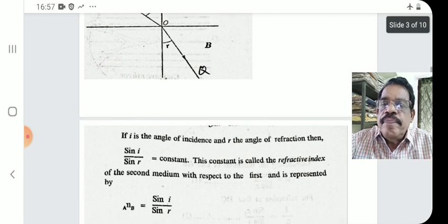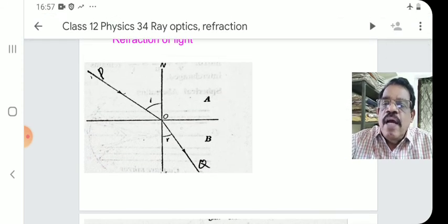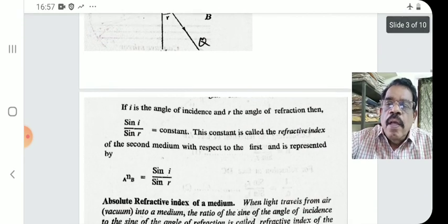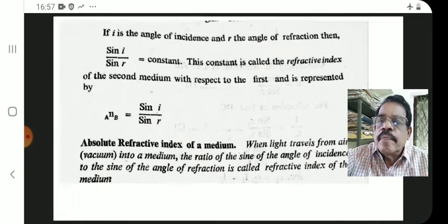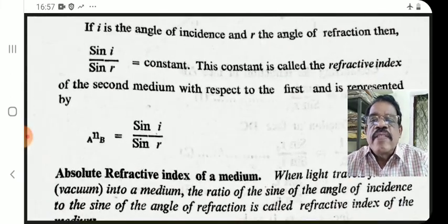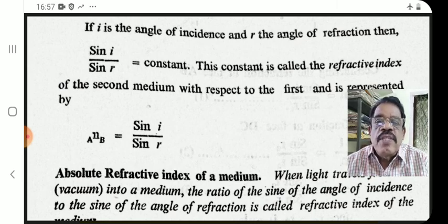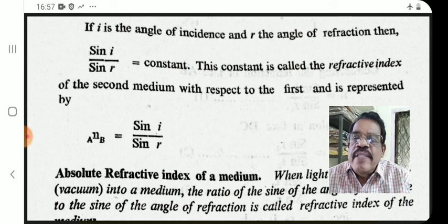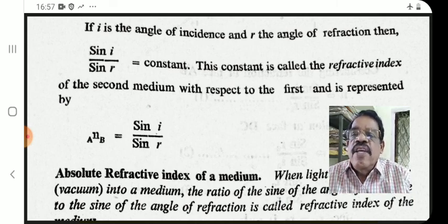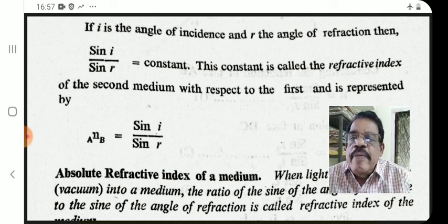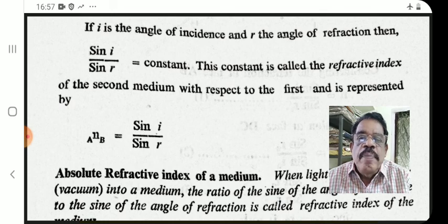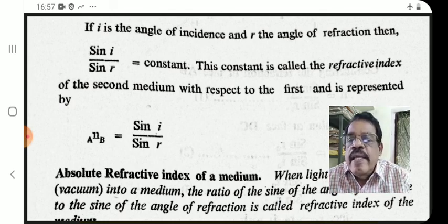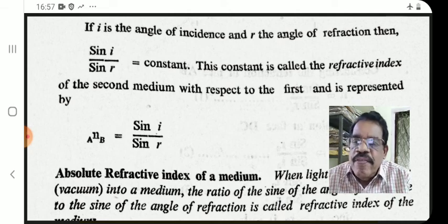The second law states sine i / sine r equals a constant. This constant is called the refractive index of the second medium with respect to the first medium, and is represented as the symbol n.